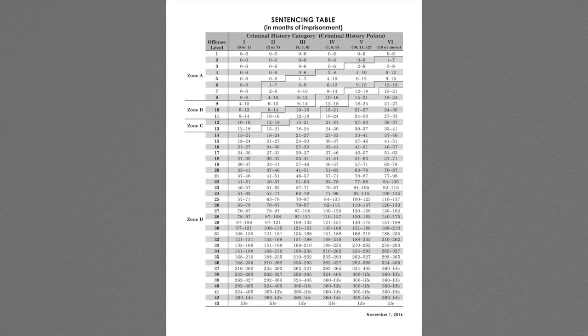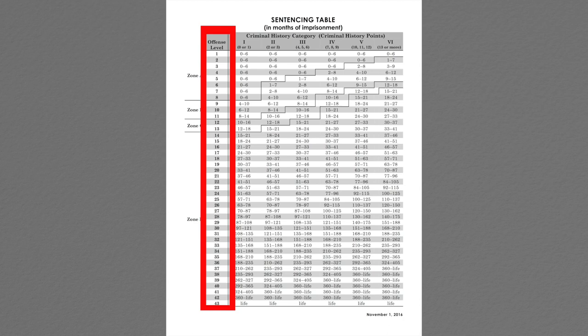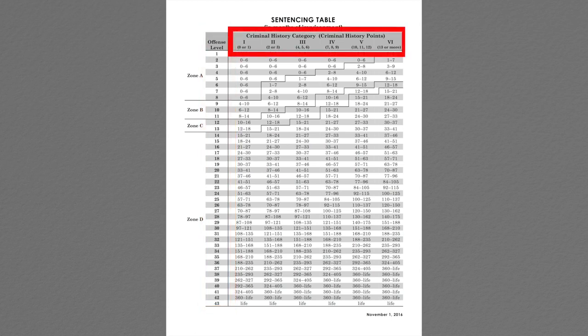This is what the sentencing table looks like — basically a chart. On the far left side, the offense level goes down vertically from one all the way to 43; the higher the offense level, the more serious the crime. Across the top, it goes across by criminal history categories, Roman numeral one through six. The criminal history category is based on the number of points you calculated for prior convictions: if someone has zero prior convictions, they're in category one; if they have many recent criminal convictions, they could be as high as category six.